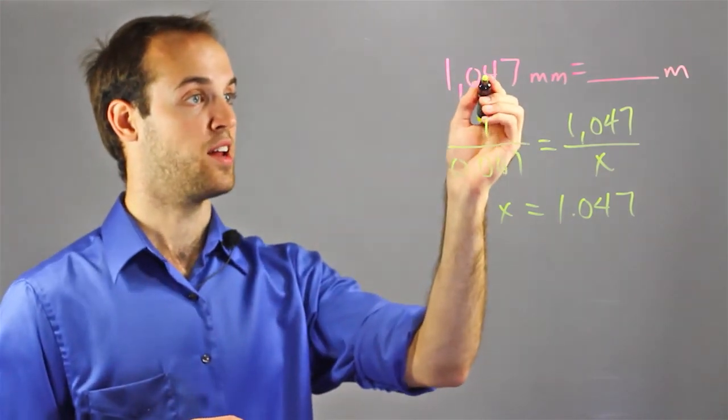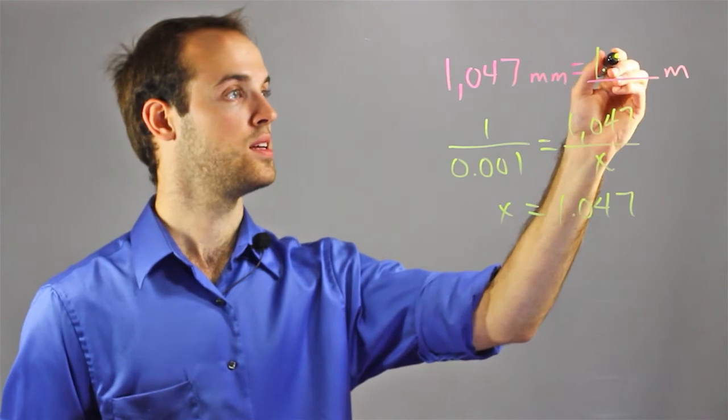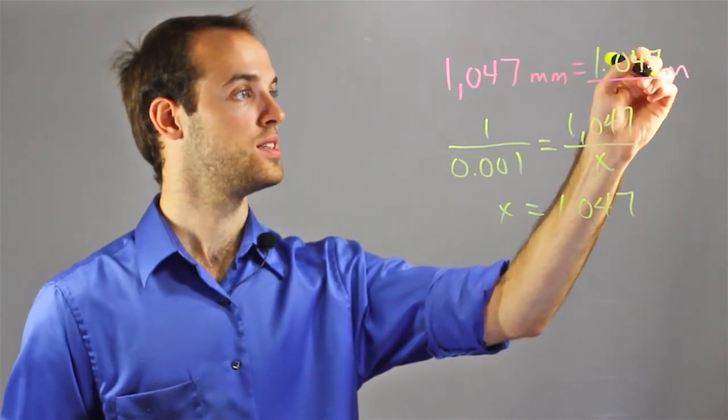I know that 1047 millimeters is equal to 1.047 meters.